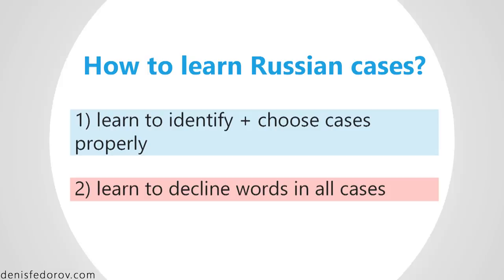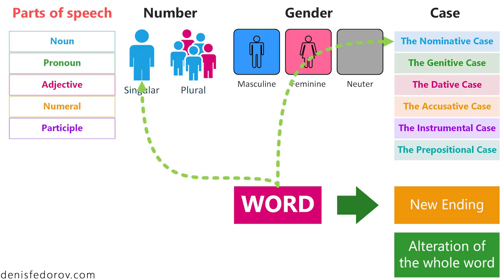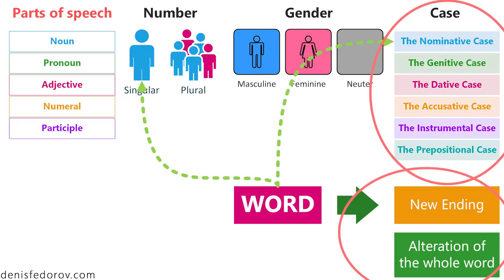We finished the previous video with the cases mechanisms, so let's continue. The cases mechanism in simple words looks like this: first, learn to choose the proper case; second, learn to decline — transform words into a needed case. In other words, we need to first understand which of the six cases to choose, and second, learn to transform words by properly changing endings.